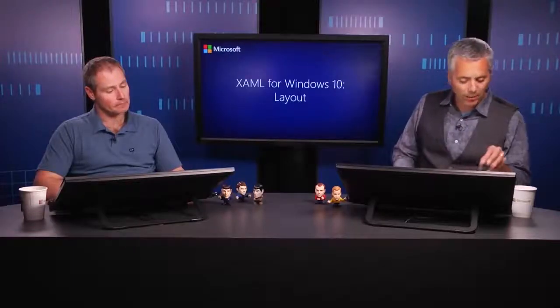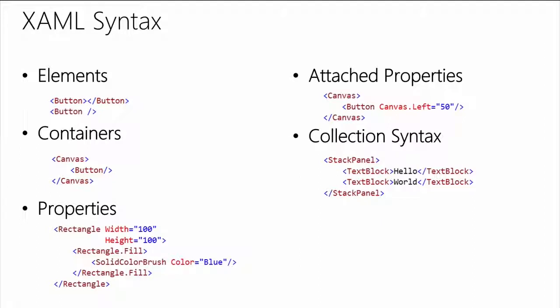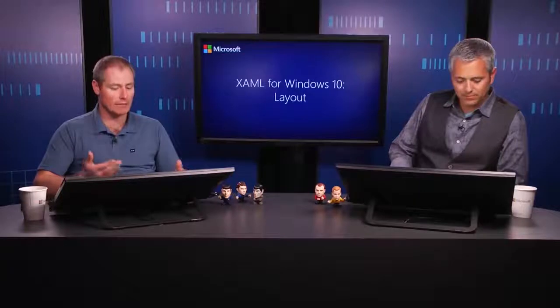Setting properties can be done in a simple or rich way. Height and Width can be set straight to 100 — those are doubles, but 100 is a string. There's a type converter that automatically reads these and tries to set them properly. Rectangle.Fill isn't set to a value of 'blue' directly; it's set to a class — SolidColorBrush — and within SolidColorBrush, we set its Color property to Blue. Color comes from the Colors enumeration, so there's a type converter taking that 'blue' string and converting it.